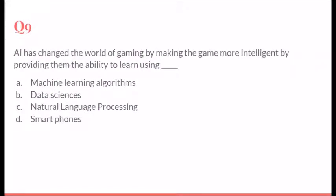AI has changed the world of gaming by making the game more intelligent by providing the ability to learn using what? So ability to learn. Learning process becomes more smart when you are talking about something called as machine learning. So machine learning is the correct option.